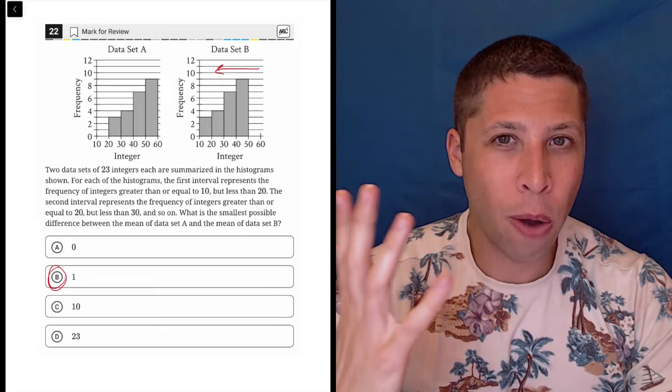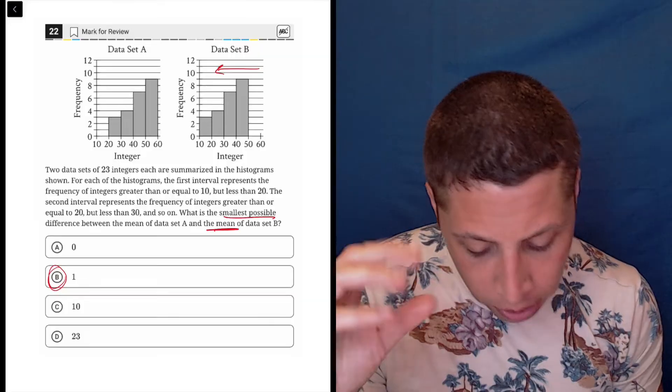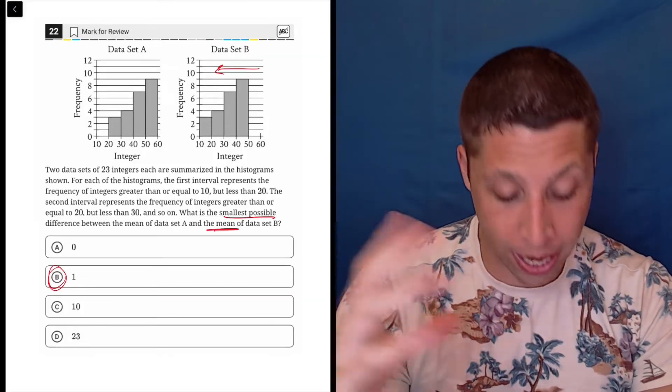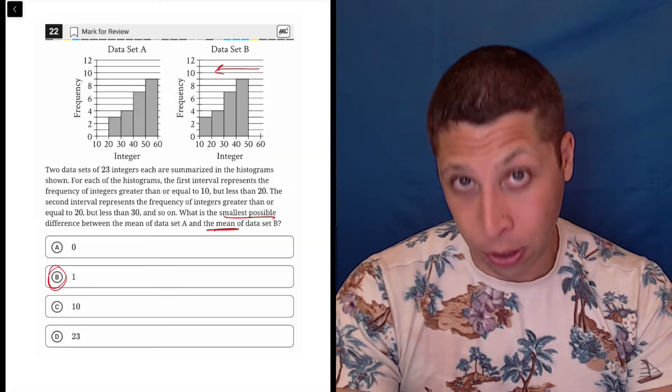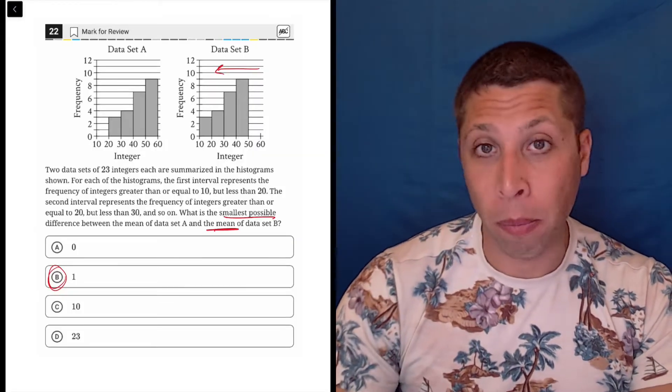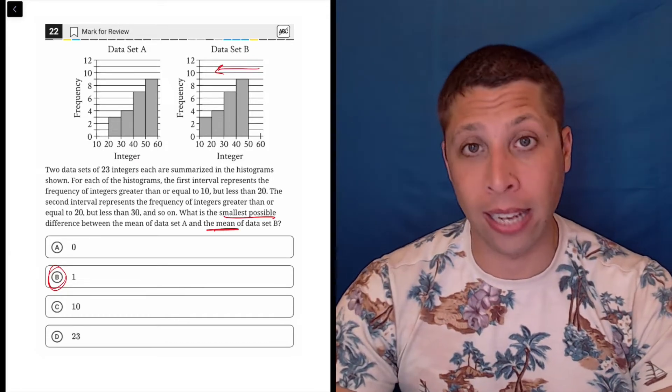So how would that affect, in this case, the mean? That's what they're asking. And they want the smallest possible difference between the mean of A and the mean of B. Now, if we had actual values, we could just kind of calculate it. We know the formula for mean. We could put them in, add the sums, divide by the number of numbers, and calculate it.